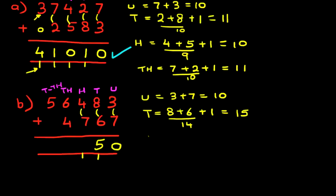Now we're going to add the hundreds. We have 4 plus 7 plus 1. The 1 we've carried over. 4 plus 7 is 11 plus the 1 is 12. 1 here and 2 over here.